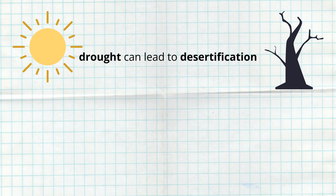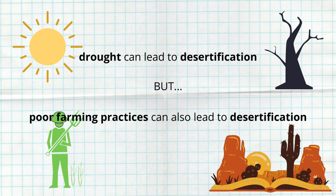Another way to think of desertification is as the spreading of deserts. Desertification is caused by droughts, but it can also be caused by poor farming practices.